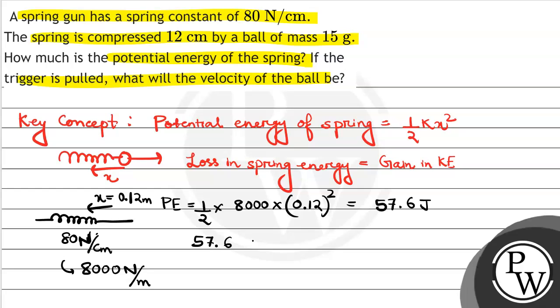57.6 equals loss in spring energy, which equals gain in kinetic energy, half into m, which is 15 upon 1000 kilograms, into v squared. So the velocity value is 87.6 meters per second.